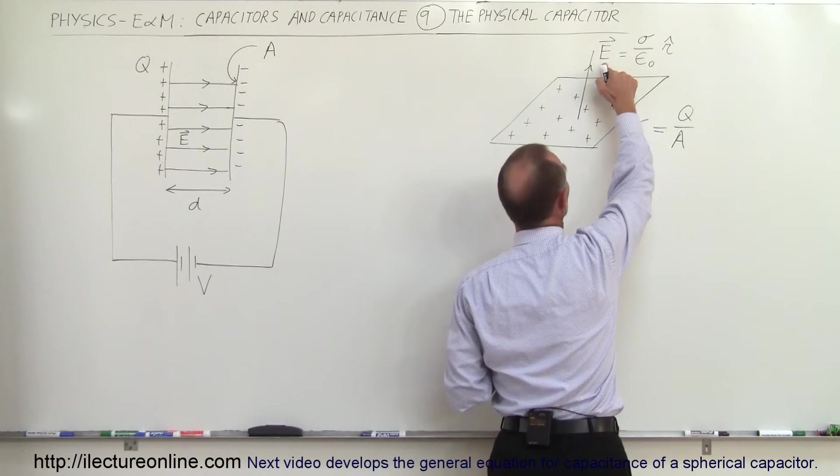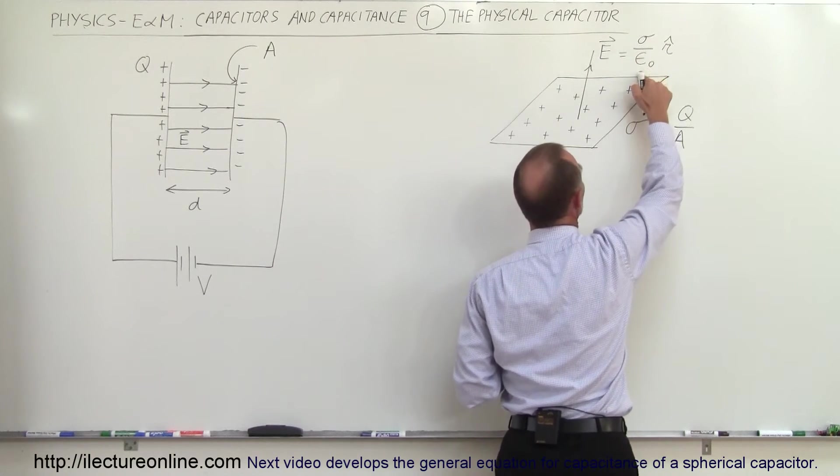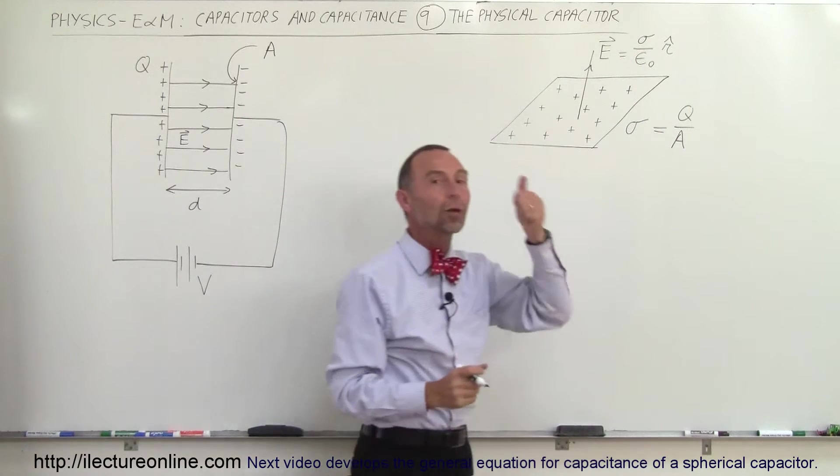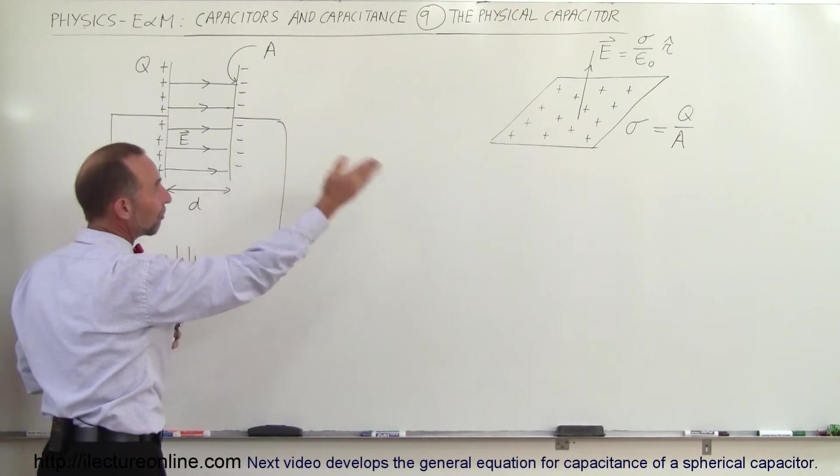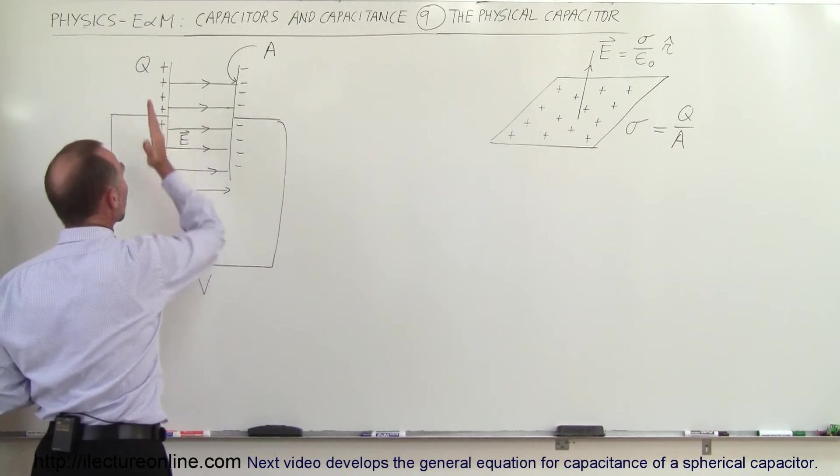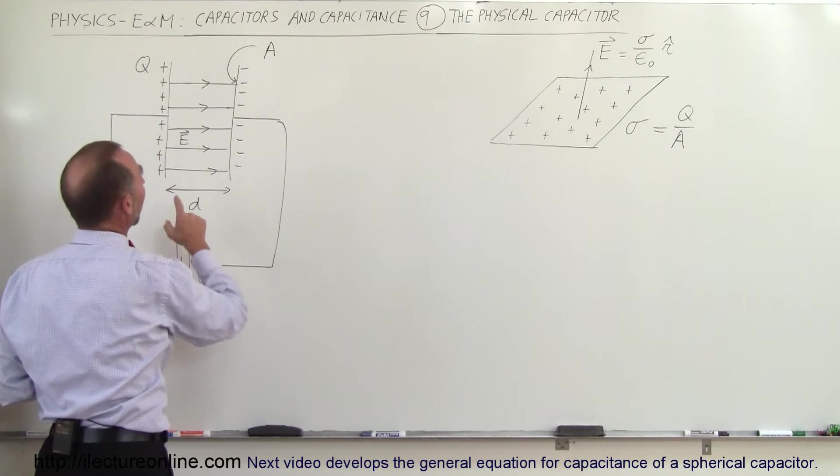And so here the electric field therefore would be the charge density divided by epsilon sub-naught in the radially outward direction, which means electric field inside here will be a function of how dense the charge is on one of the plates.